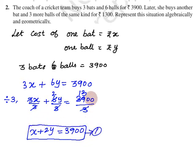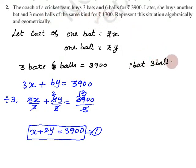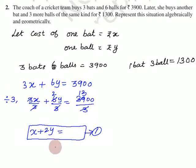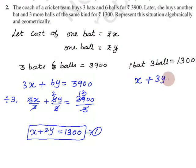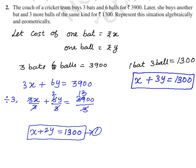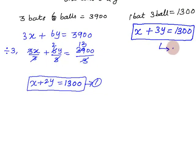Now the second condition: later, she buys another bat and 3 more balls for 1,300 rupees. 1 bat is x rupees and 3 balls is 3y. So x + 3y = 1,300. This is the algebraic equation for the second condition — Equation 2.